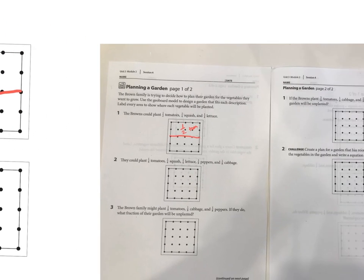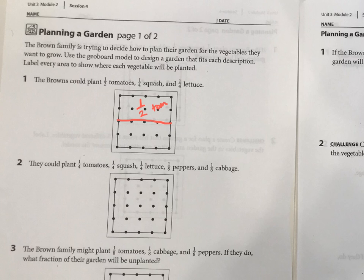So I will do my one fourth like this and add one fourth squash and one fourth lettuce. Now those squash aren't really blue, but anyways...